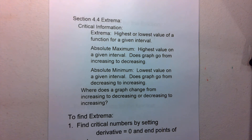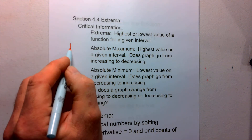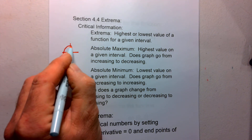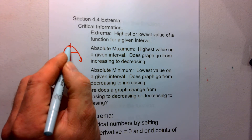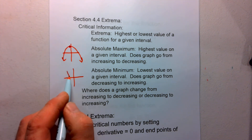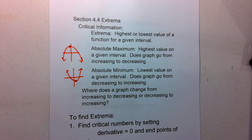Some definitions to go through: extrema is the highest or lowest value for a function on a given interval. The absolute maximum is the absolute highest it can go — our graph is going to go from increasing to decreasing. The absolute minimum is going to go from decreasing to increasing. So on a graph, that maximum is going to occur where our graph goes from increasing to decreasing, at that highest point, and the minimum where the graph goes from decreasing to increasing.